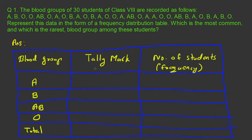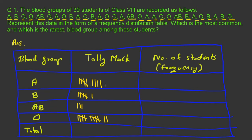Now I need to put the data into this table. The first data is A, so I mark it there. Second data is B, so I mark one there. Third is O, so I mark there. Fourth is O, I mark there. Fifth is AB, so I mark there. Like that, I have to mark for all the data given here. After making tally marking, I just put the number in the frequency column.